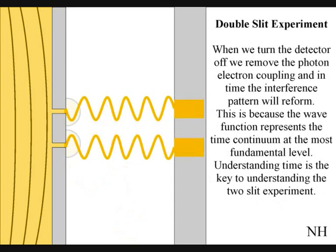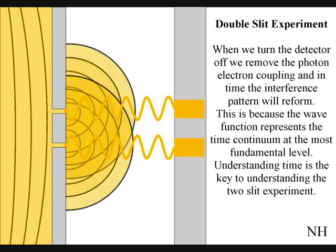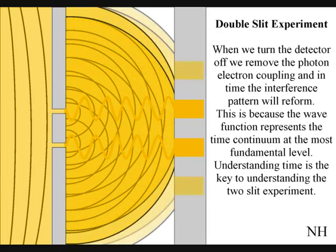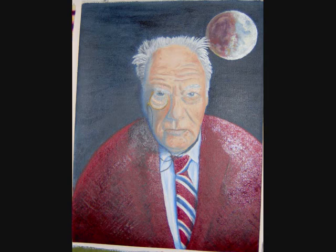If we turn the detector off, we remove the photon-electron coupling, and in time, the interference pattern will reform. Just like in Newton's first law of motion, the interference pattern will continue to maintain its state, unless acted upon by an external force.